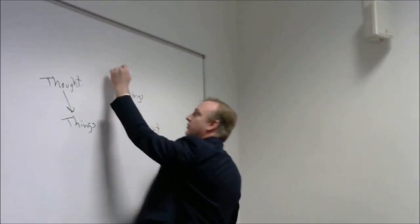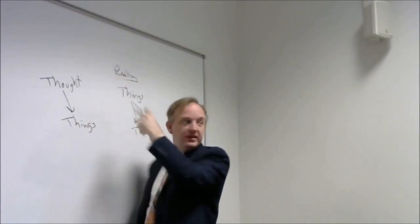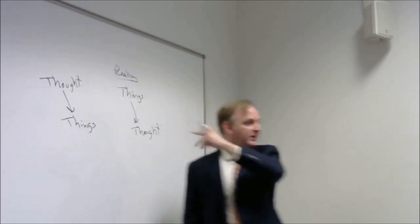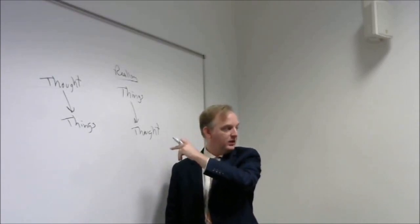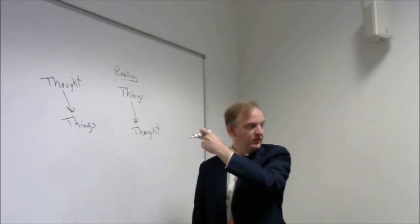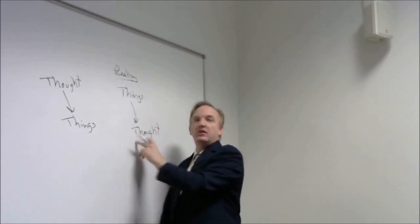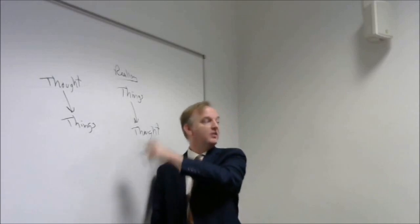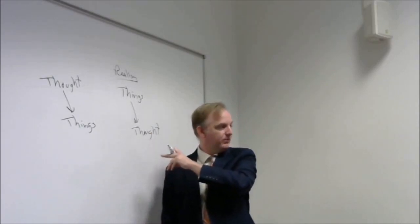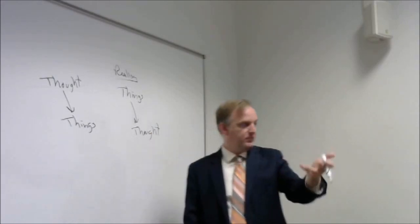The realist model goes from things to thought, so we begin with things, and then we talk about the thoughts we have of things, the way things are represented in thought. So this turns out to be a component of our encounter with things, but our encounter with things goes beyond just what we think about. There's something prior, things.